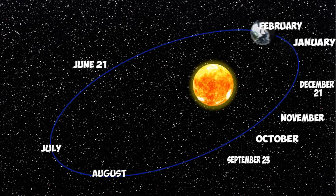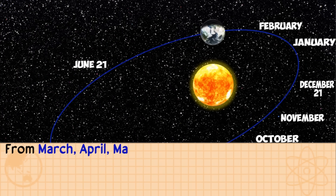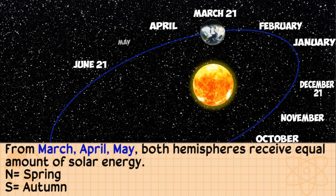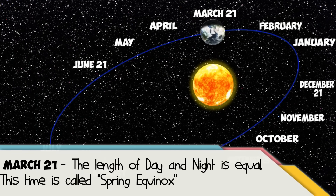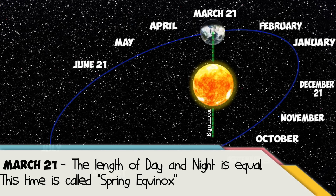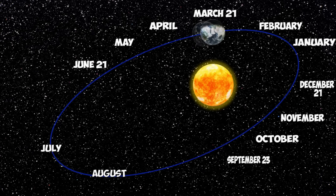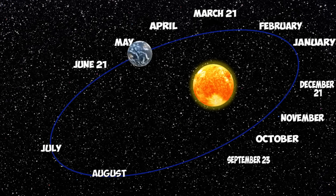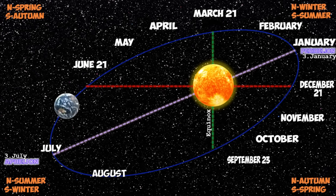As the Earth moves through March, April, and May, both hemispheres receive equal amounts of solar energy. On March 21, the length of day and night is equal — this time is called the spring equinox. It is also a signal of the start of a new season, and this cycle of Earth's rotation and revolution happens again and again.